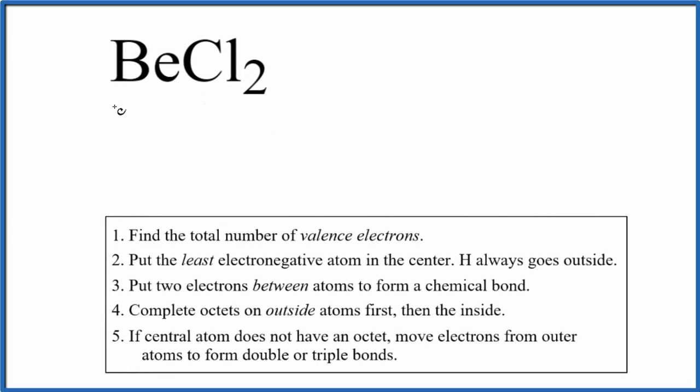Let's draw the Lewis structure for BeCl2. This is beryllium chloride. When we draw Lewis structures for compounds like beryllium chloride, first thing we do, count the total number of valence electrons.